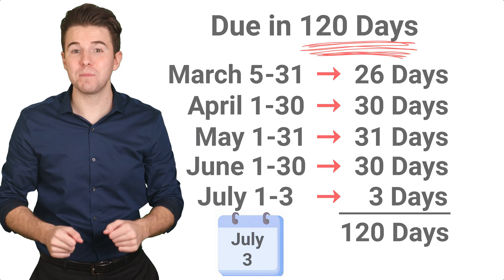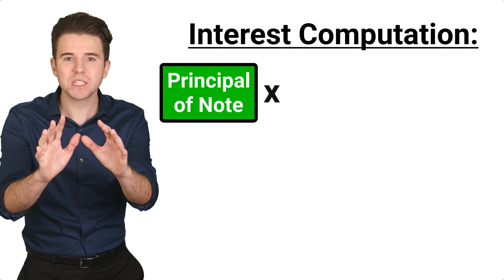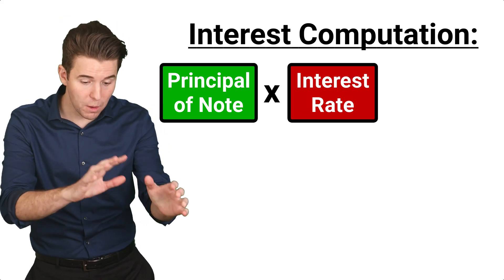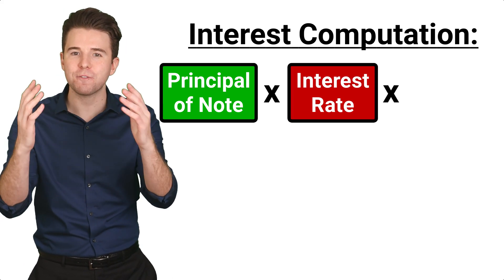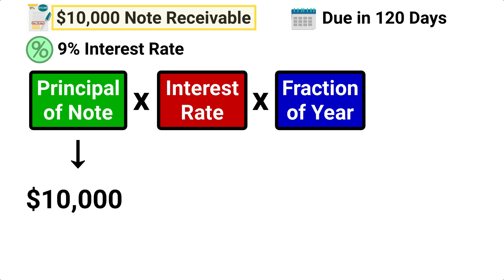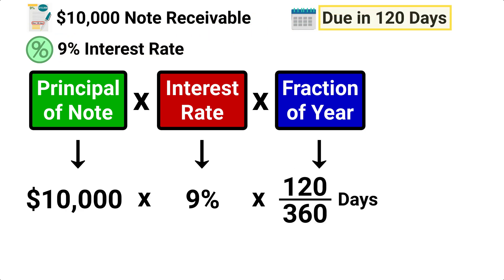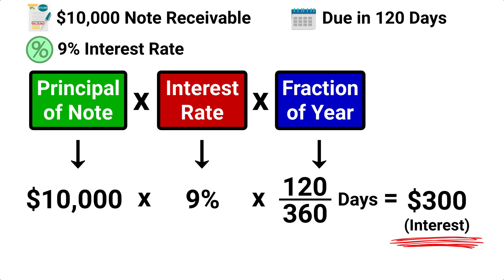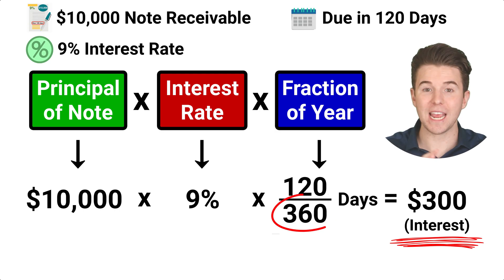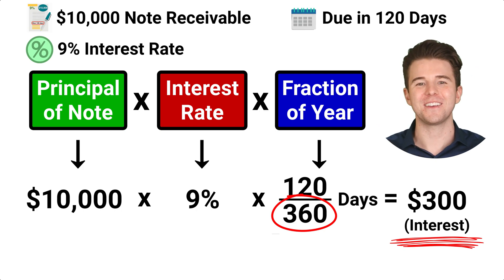Next, let's compute interest. To do this, we take the principal of the note and multiply it by the annual interest rate, and multiply that by a fraction of the year. In our example, we take the $10,000 principal of the note, multiply it by 9% or 0.09, and multiply that by 120 over 360 days. This gets $300 of interest for the note. We use a 360-day year for this equation, called the Banker's Rule, because it makes for easier calculations.